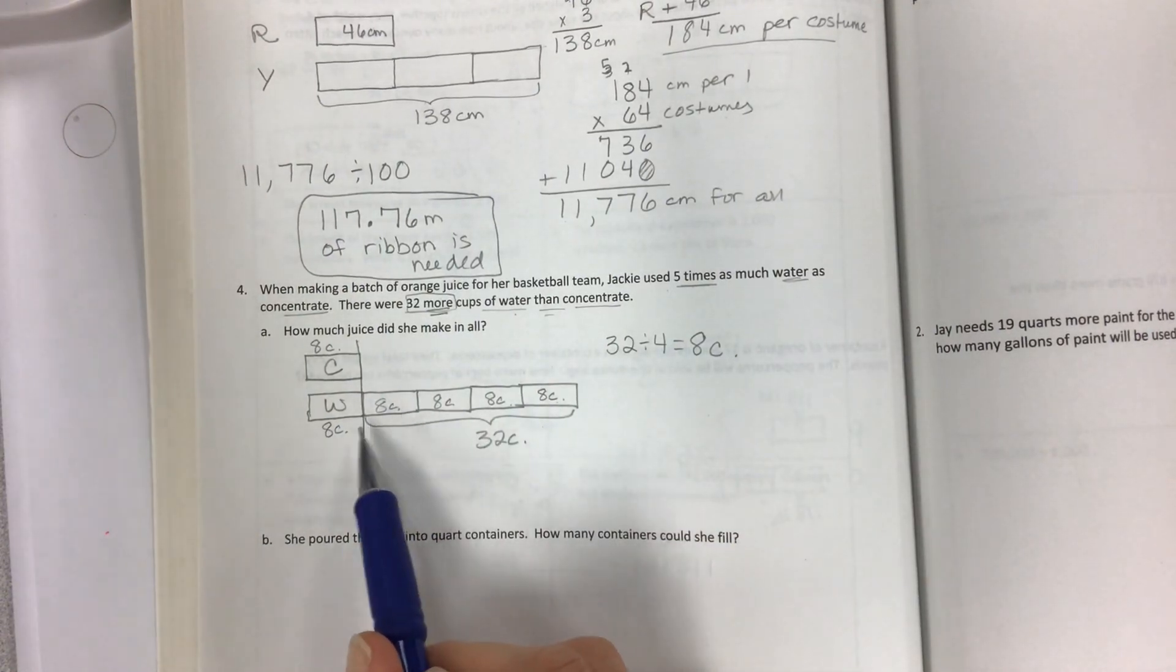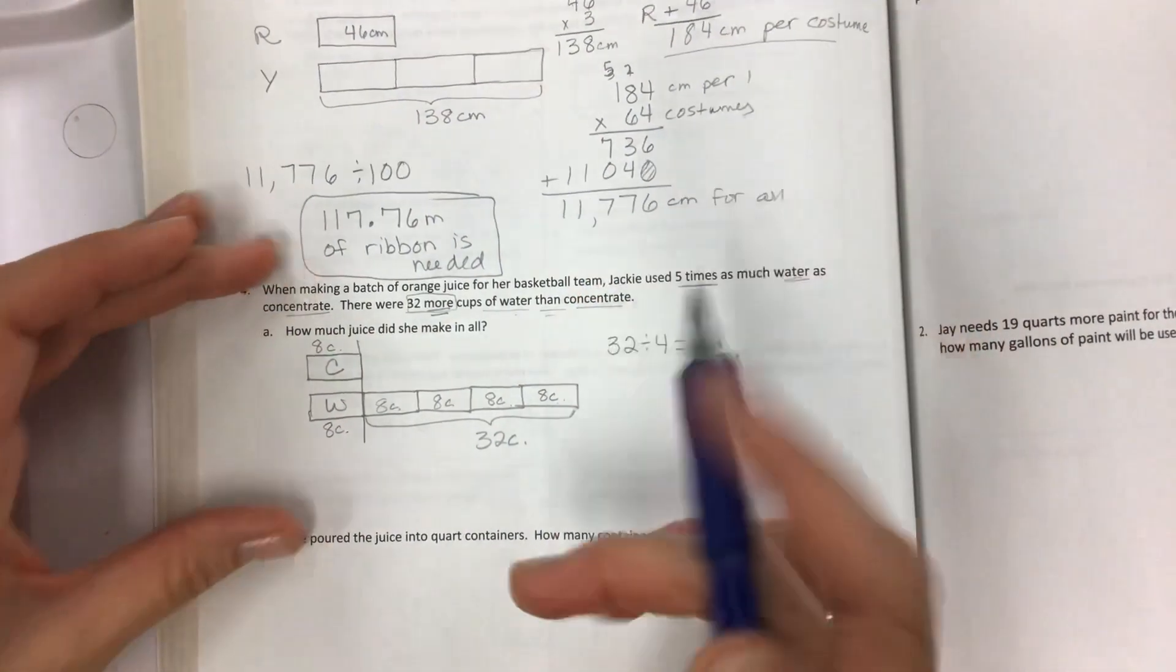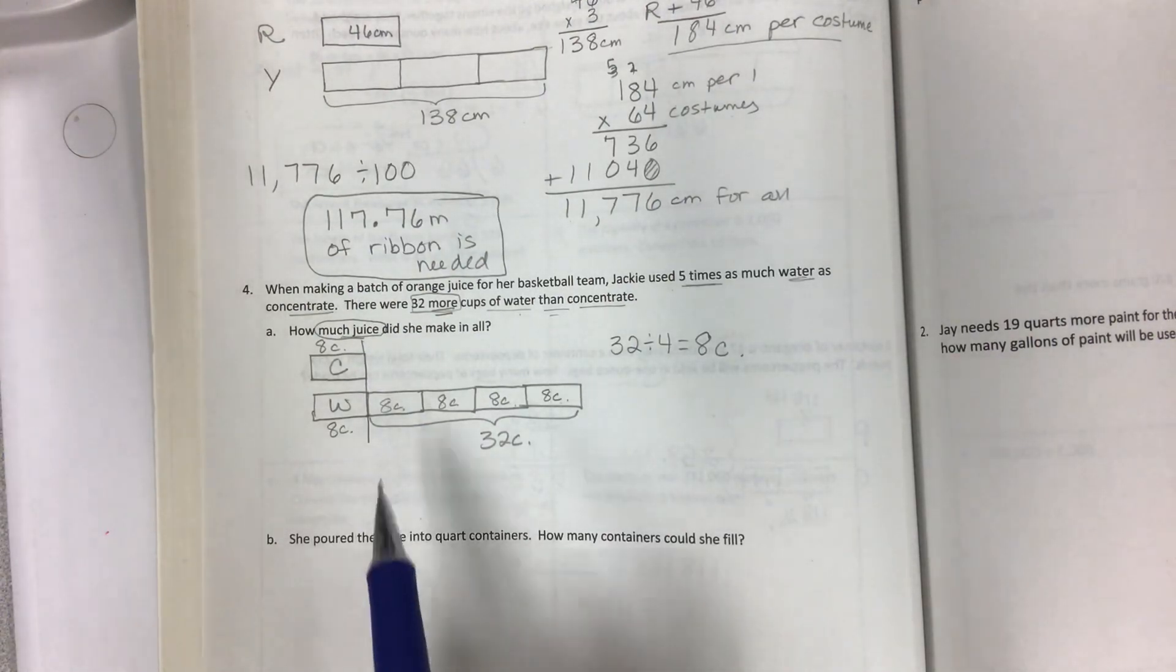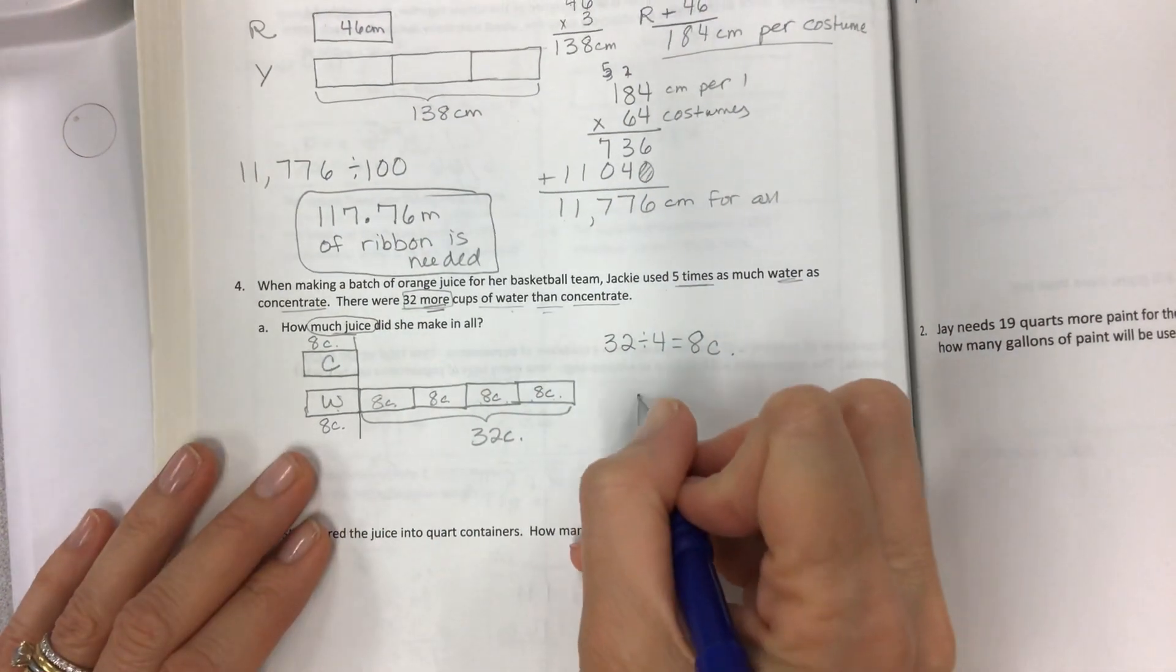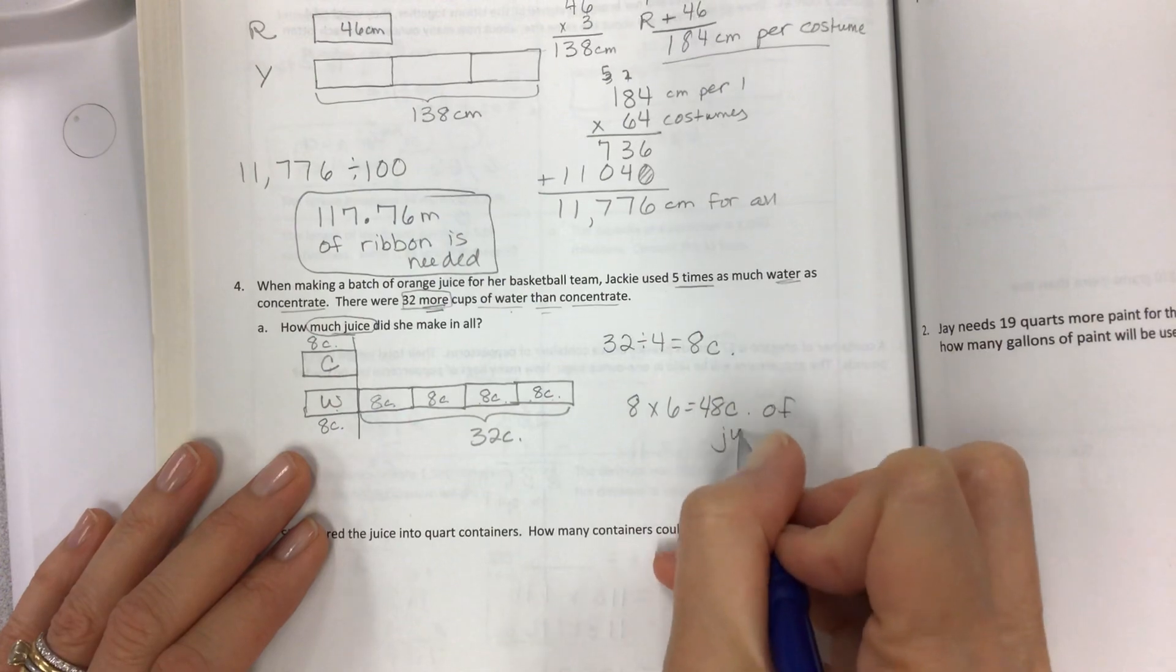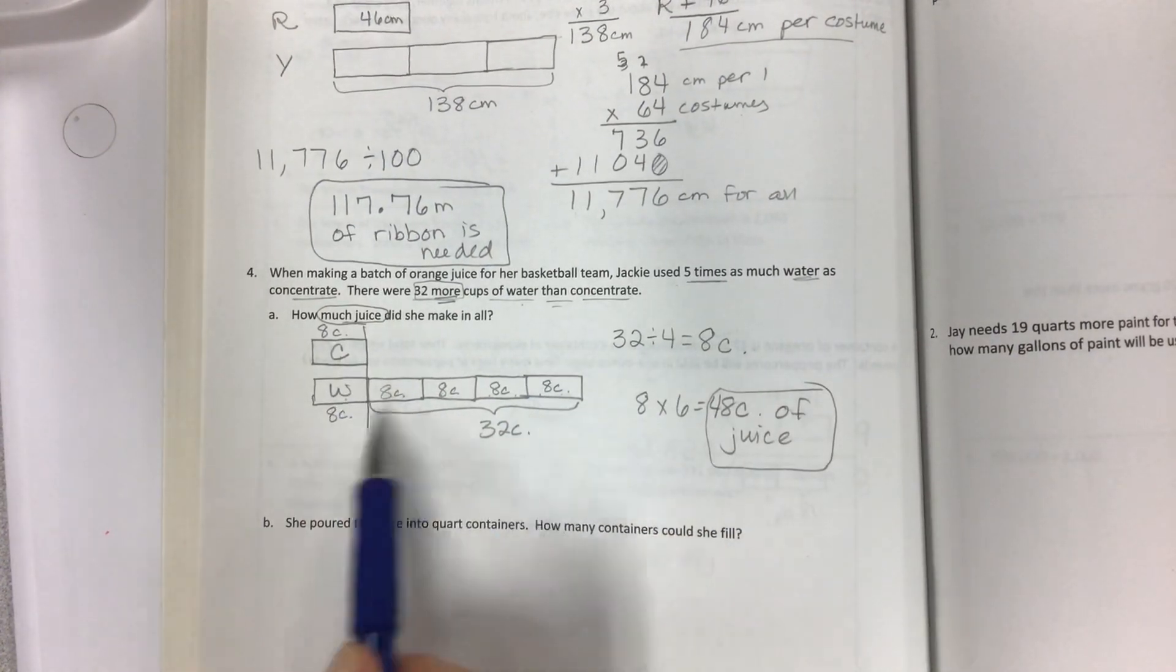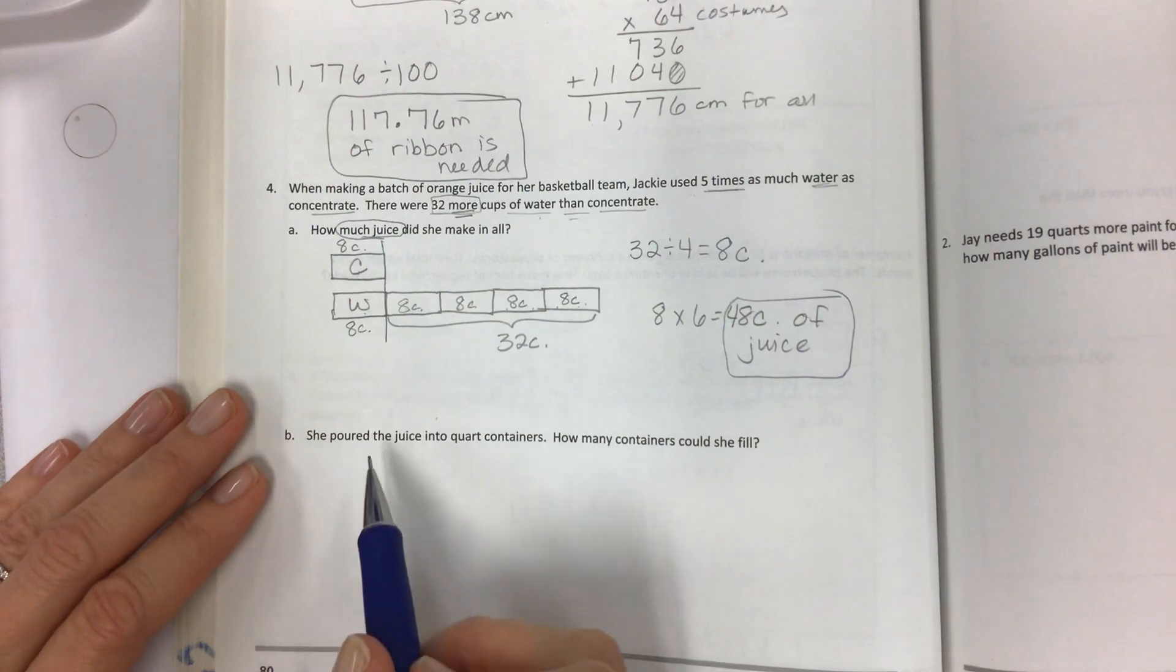Now I have all the information I need to figure out all the juice. So if you wanted to know how much water there is, or how much concentrate there is, or how much total juice she made in all, which is where we're going with this, then all we have to do is put all these eight cups together. One, two, three, four, five, and six would be all of the eights of juice. So you can find out just the water or the concentrate or put it all together. 48 cups of juice. See how easy those tape diagrams make everything?